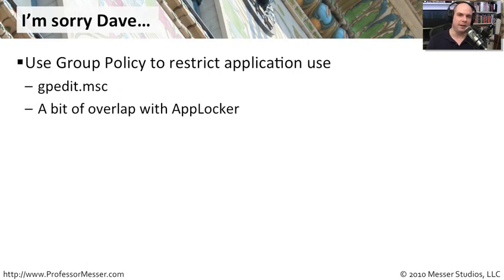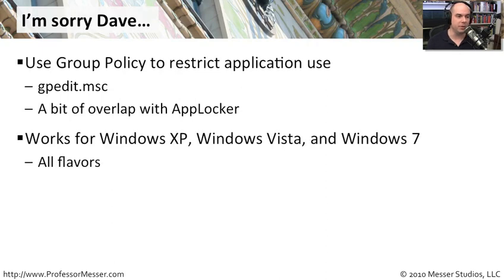There's a little bit of overlap here with AppLocker. Both of these do similar things — allow or disallow someone to run a certain program. But AppLocker has some other capabilities that are a little bit better when it comes to managing it. However, the scope is a little bit smaller with AppLocker. The group policy changes associated with software restrictions work whether you're running Windows XP, Vista, or Windows 7, so policies set here will work properly across those platforms.